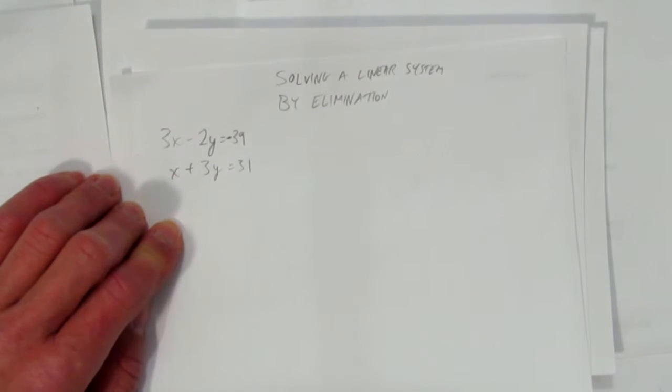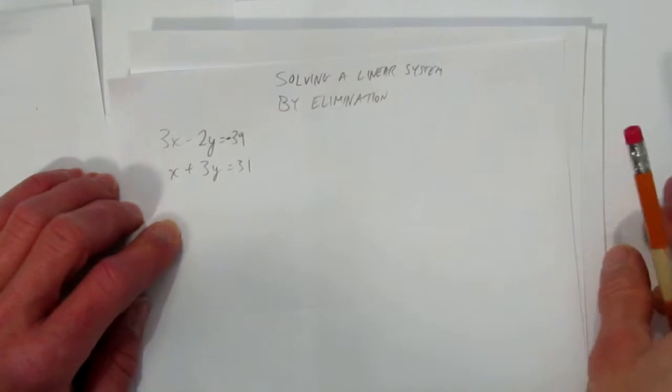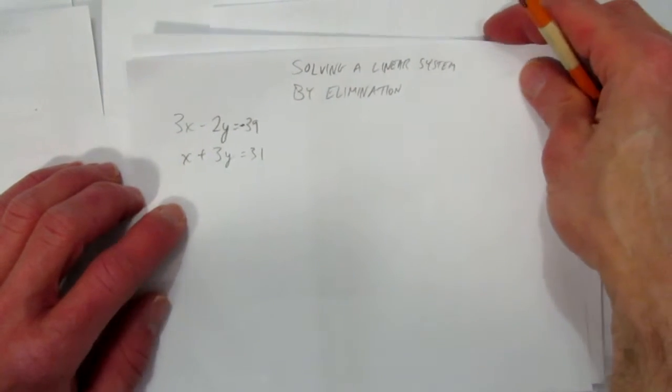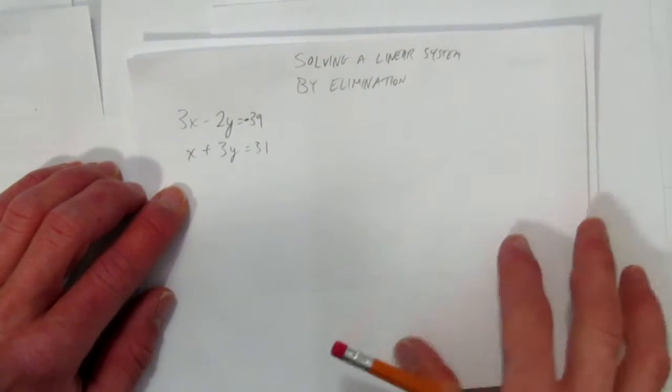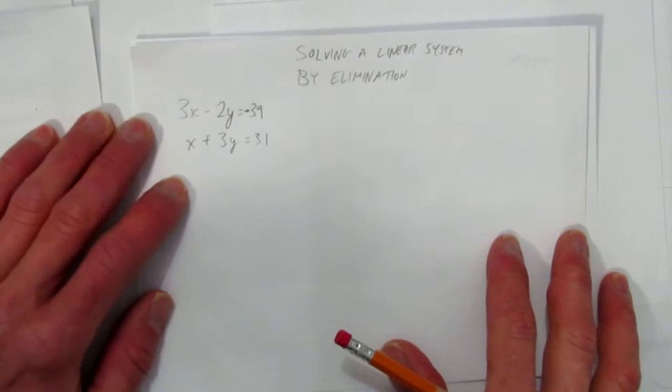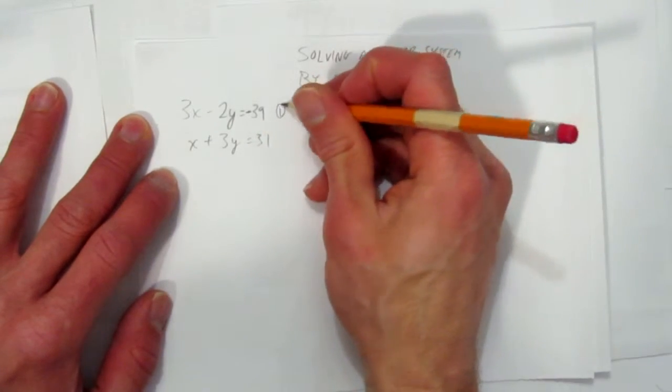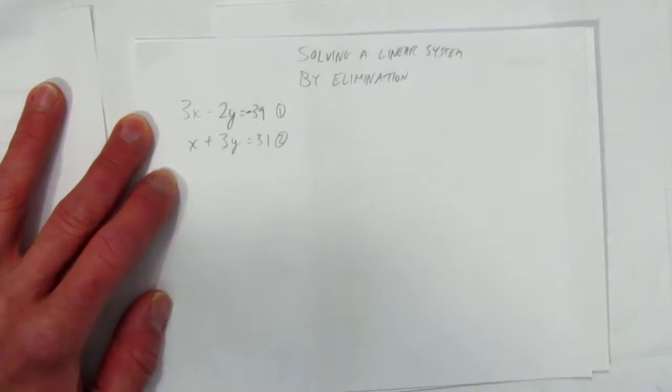In this video, we'll look at solving a linear system by elimination. So the system given is 3x minus 2y equals 39 and x plus 3y equals 31. Two equations. Let's label them equation 1 and equation 2.